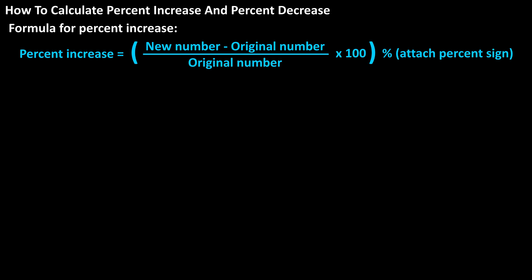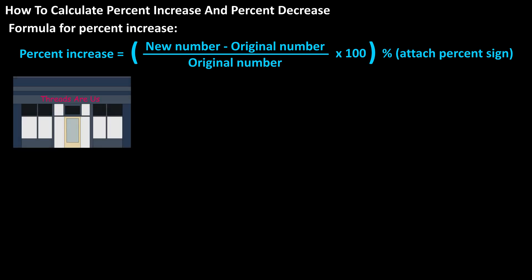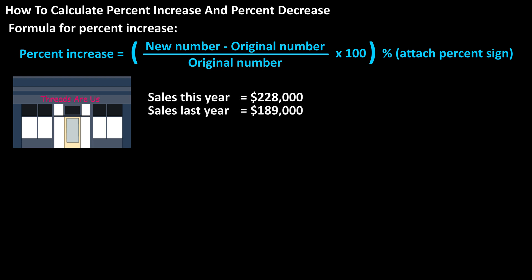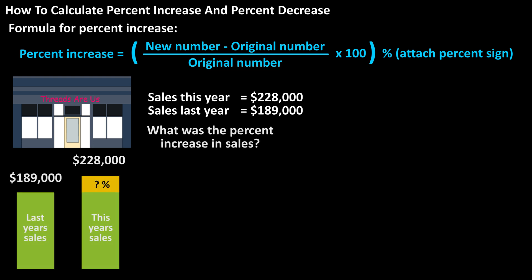As an example, let's say that you own a small store that did $228,000 in sales this year. Last year your store did $189,000 in sales. What was your percentage increase in sales? The new number is this year's sales of $228,000 and the original number is last year's sales of $189,000.